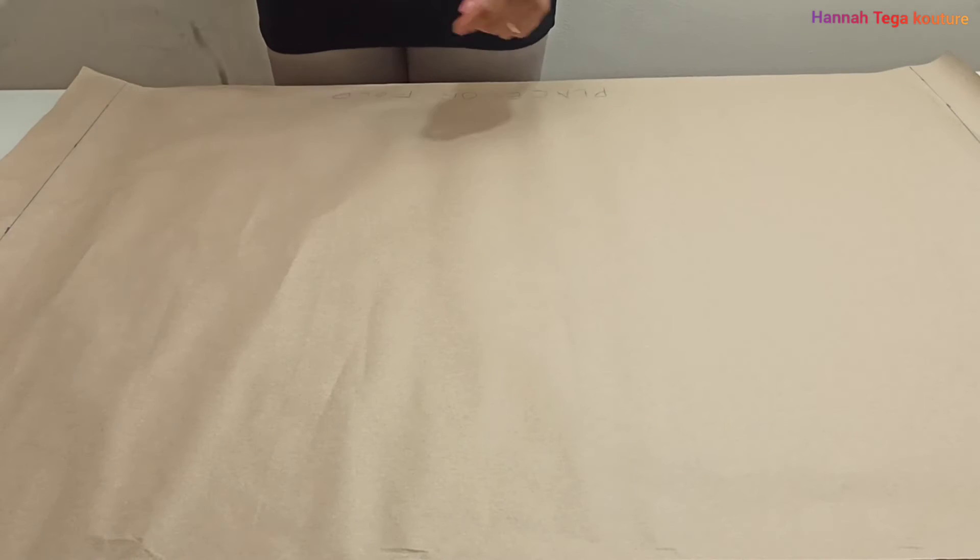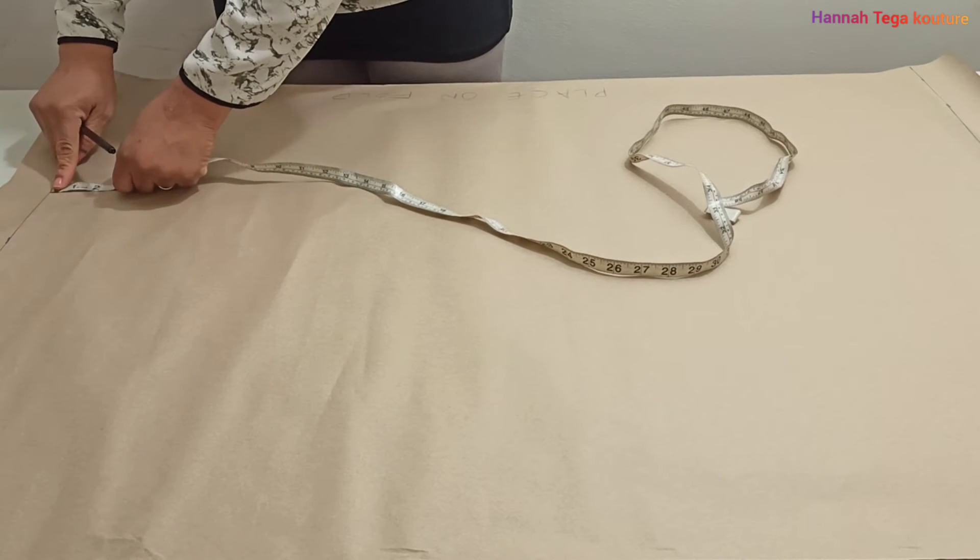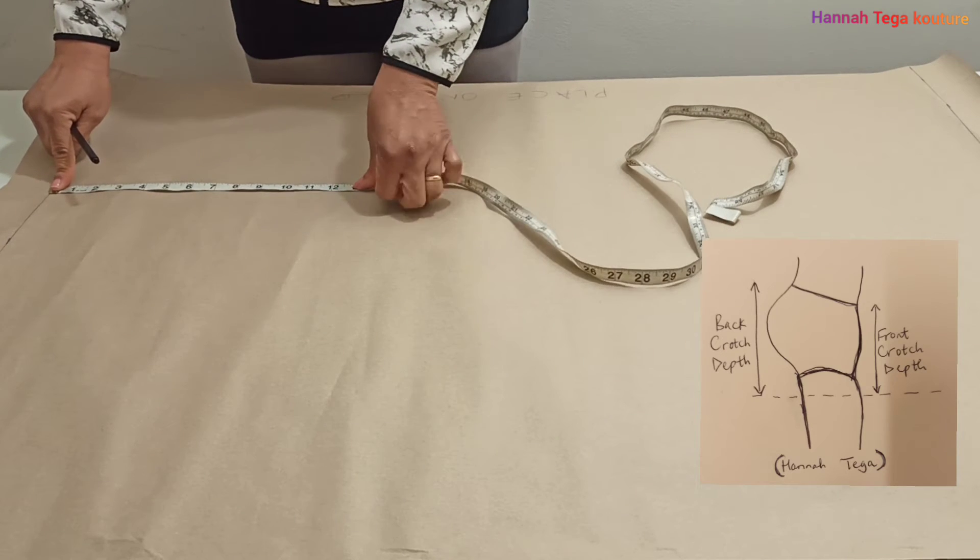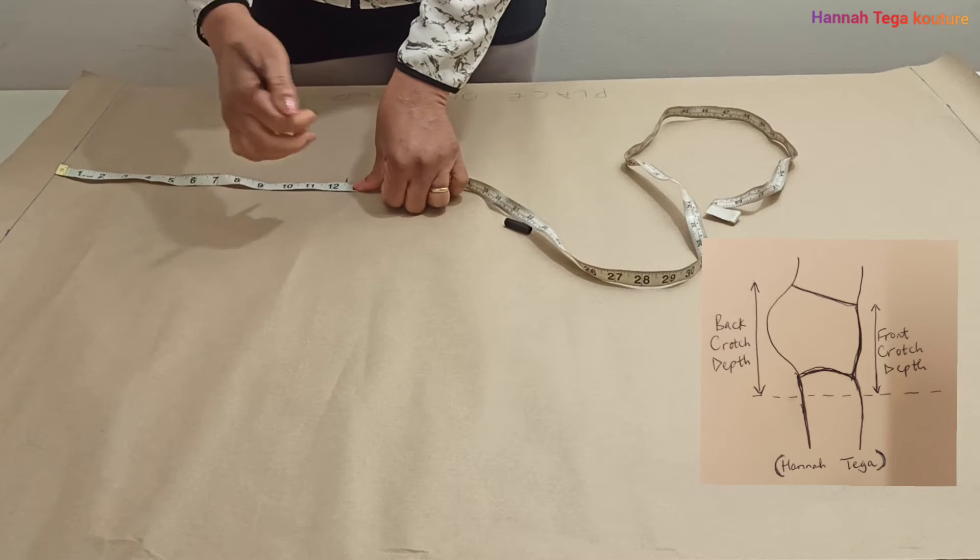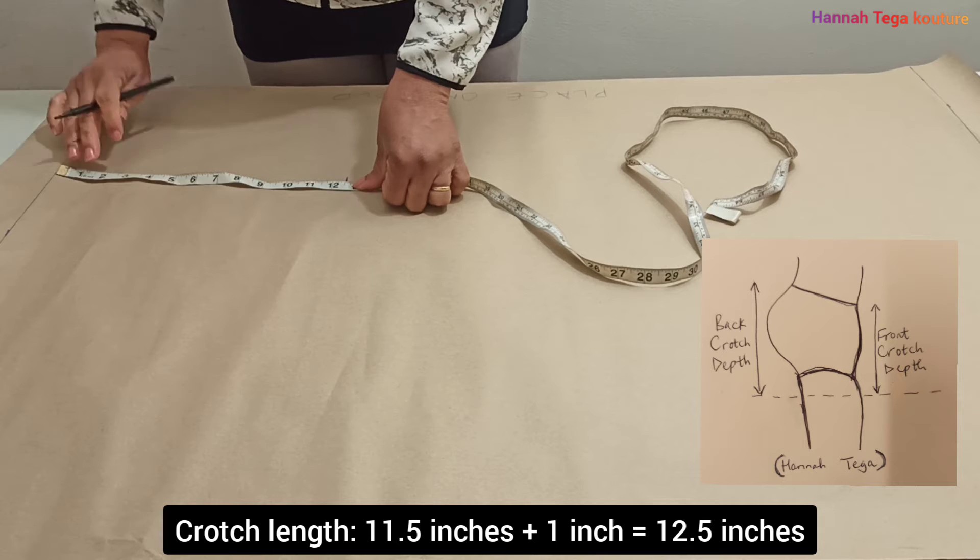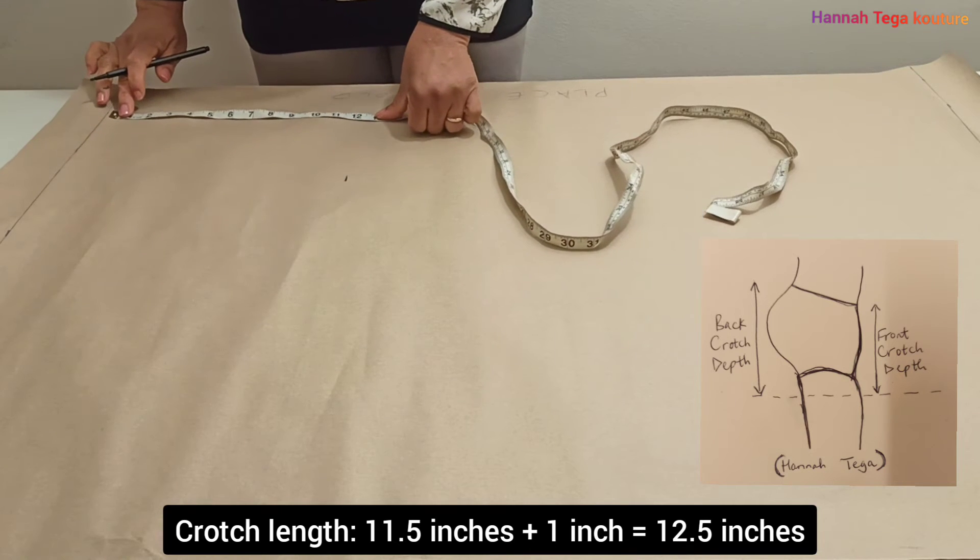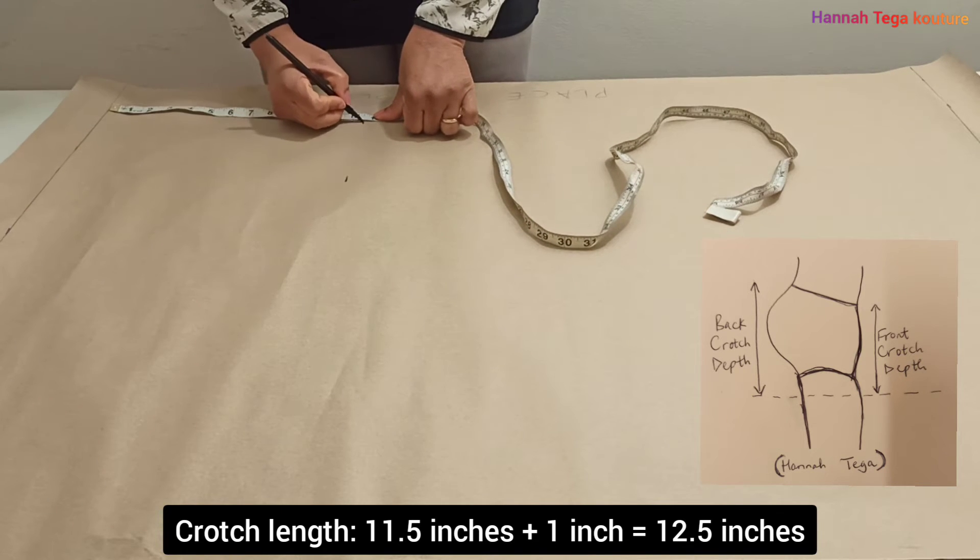Here we'll be marking our crotch measurement. My crotch measurement is 11.5, I'll be adding one inch and the total will be 12.5 inches. So I'll be making markings of 12.5.